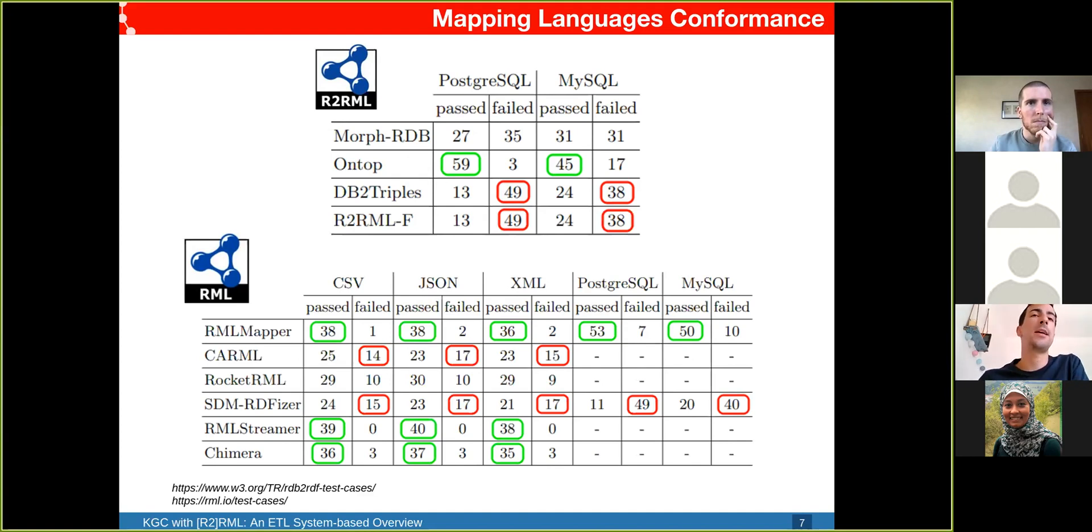For RML engines, RML Mapper, Chimera, and RML Streamer pass most of the test cases. SDM-RDFizer fails quite a bit because, similar to Morph-RDB, it generates an empty graph when it should generate an error. Also, it does not support blank nodes, and RocketRML gave some problems with graph nodes.